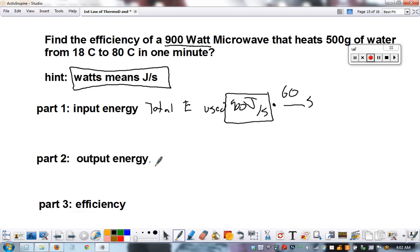Output energy is heat into water: Q equals m c delta T. That's 0.5 kilograms times 4184 times the change in temperature, which is 62 degrees Celsius. 0.5 times 4184 times 62.